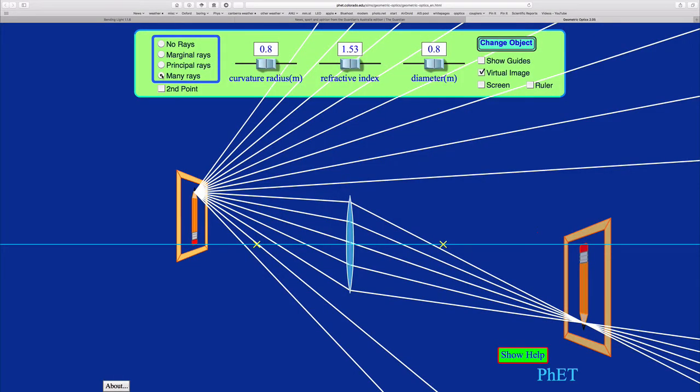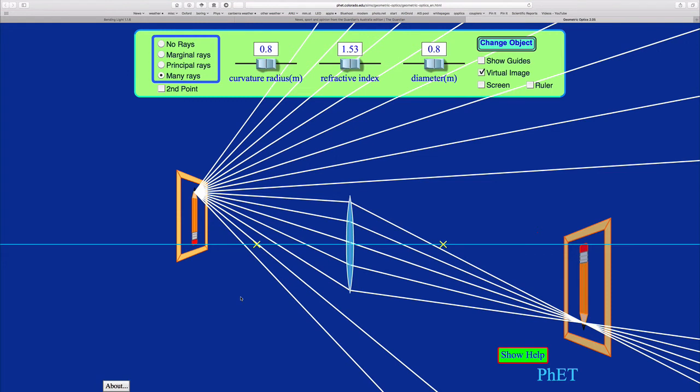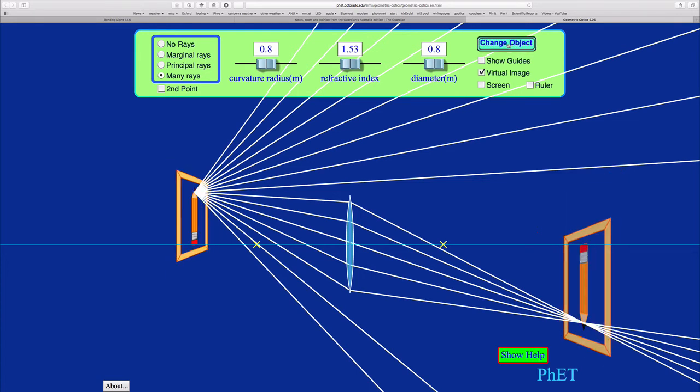So let's now look at a simulation of a lens using the PhET website. I'll put a link under this video. The object in our case here is a pencil. If you wish you can change objects to a star or a smiley face but let's just stick with a pencil.